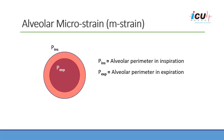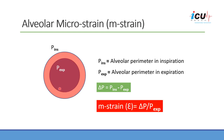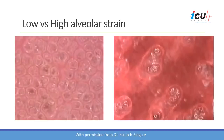It is important to understand alveolar microstrain, which is the strain occurring at the level of the alveoli. It is calculated based on the changes in the surface area of the alveoli — the alveolar perimeter in inspiration minus the alveolar perimeter in expiration, divided by the perimeter in expiration. This gives us the microstrain, or alveolar strain.